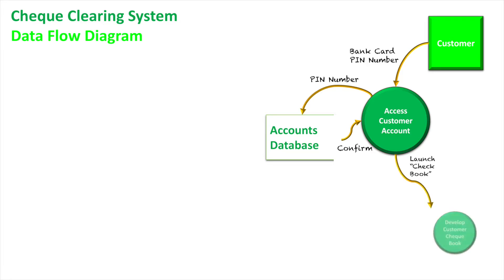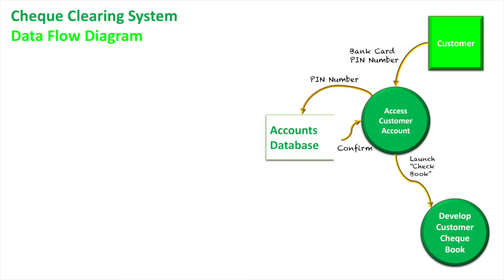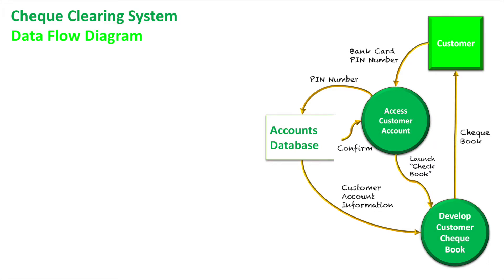Once confirmed as a customer of the bank, they proceed to an interface to launch the checkbook process. We develop the customer checkbook so they can write checks, linking it to their account information retrieved from the accounts database. Once the checkbook is created and account information retrieved from the database, we deliver the checkbook to the customer. They can then begin writing checks to people, and now we have a check recipient.